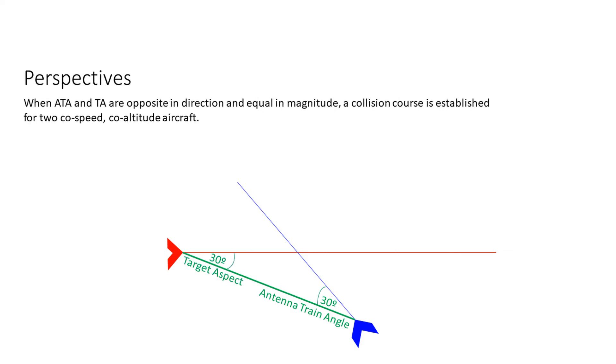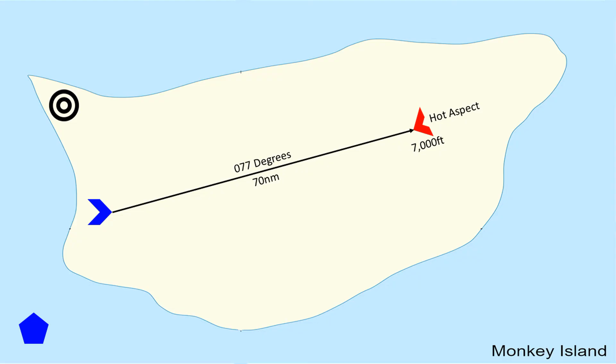When ATA and TA are opposite in direction and equal in magnitude, a collision course is established for two co-speed, co-altitude aircraft. And we're going to have a look at that in some examples. Well actually it's only one example because this isn't that complicated. It's important, but it's not complicated. So let's have a look.